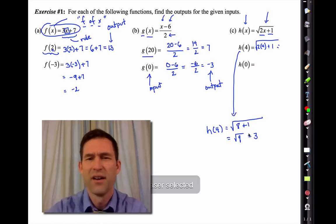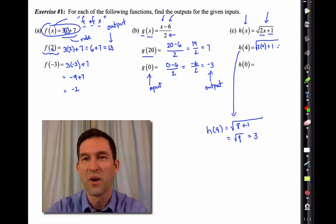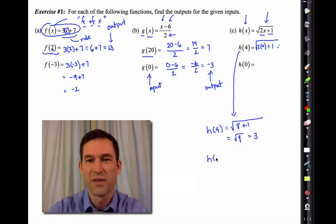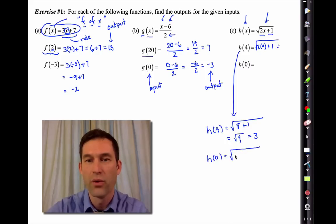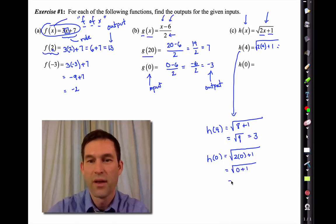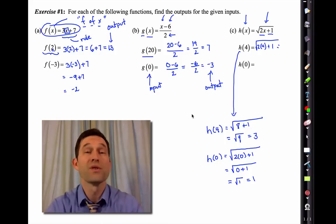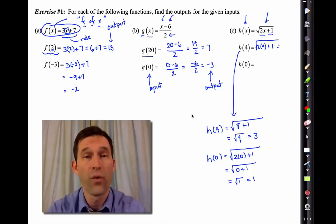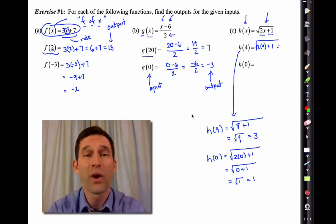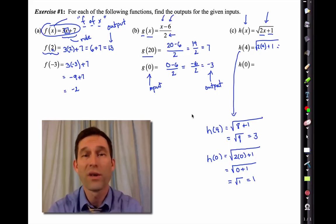Let's do h of 0 as well. The rule says take the square root of 2 times my input plus 1. Anything times 0 is 0, so I get the square root of 0 plus 1, which is the square root of 1, which is 1. These rules — which can come in all sorts of different forms — now have a way of being expressed so that you can easily say: here's my input, what's my output?